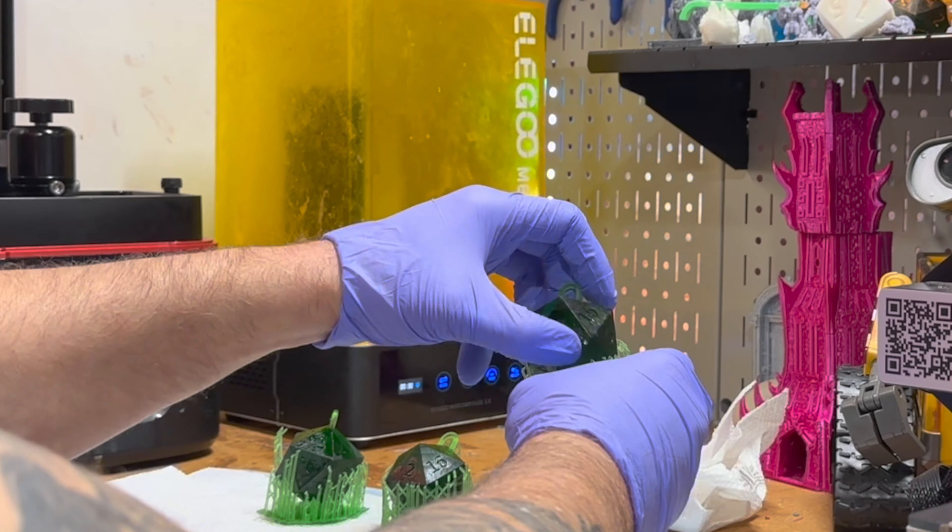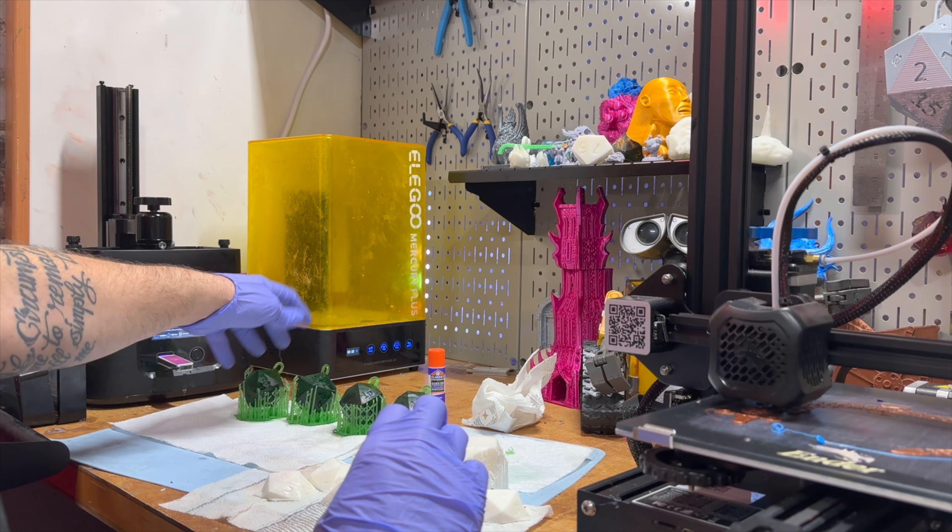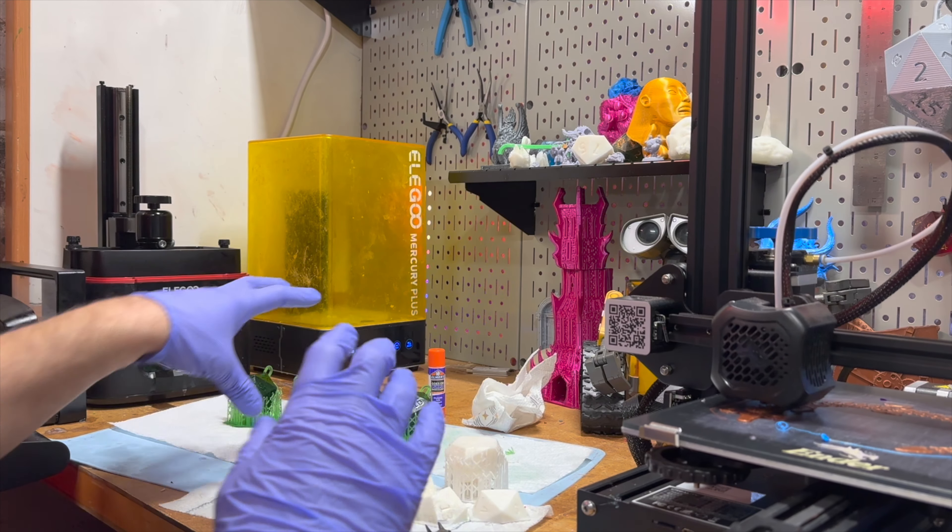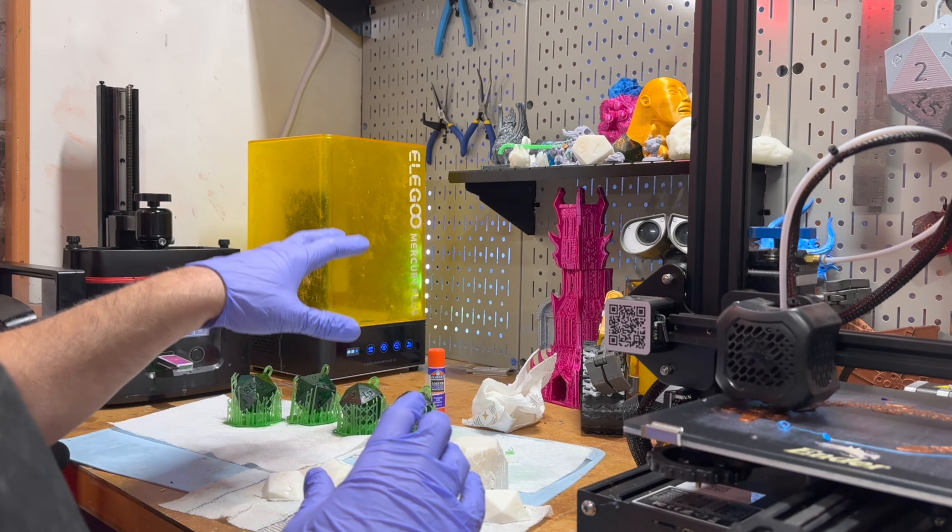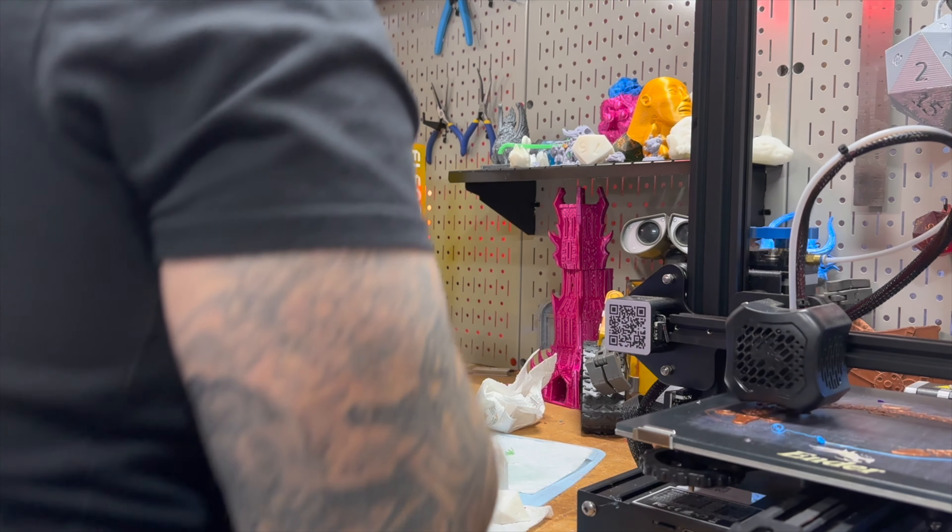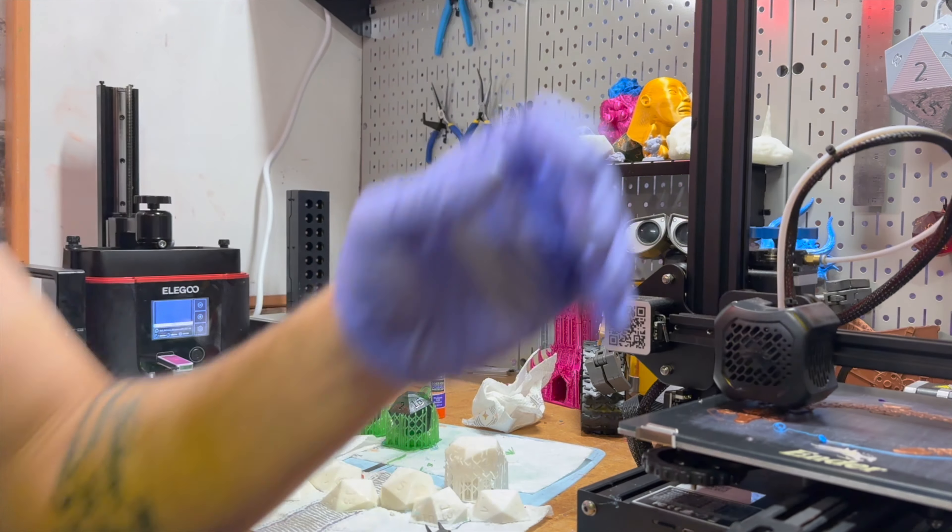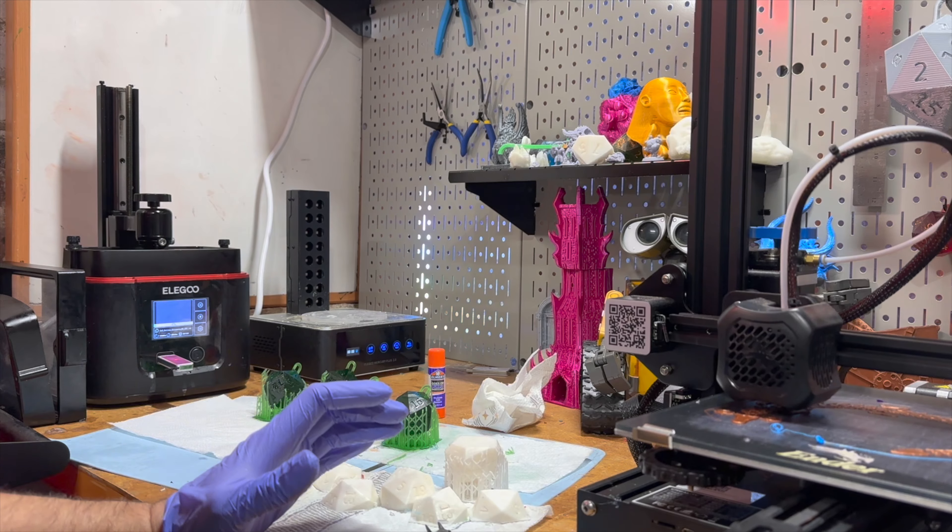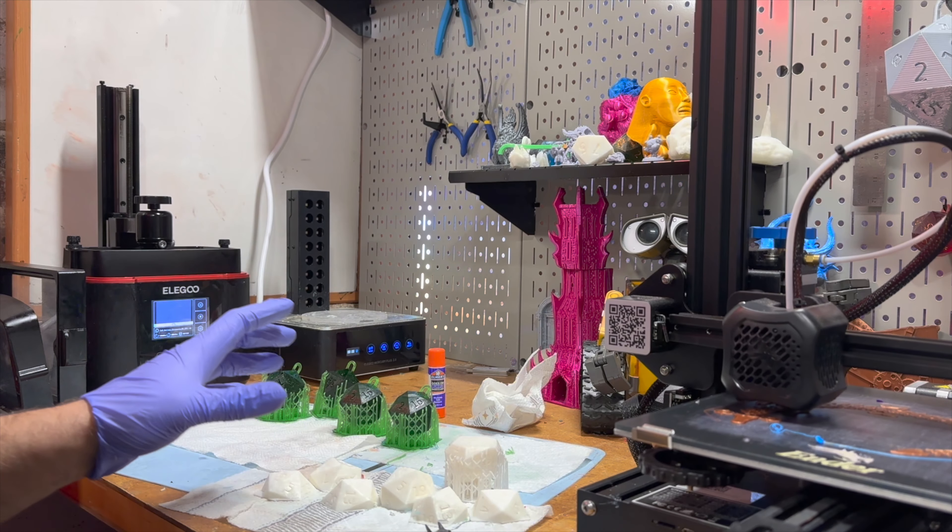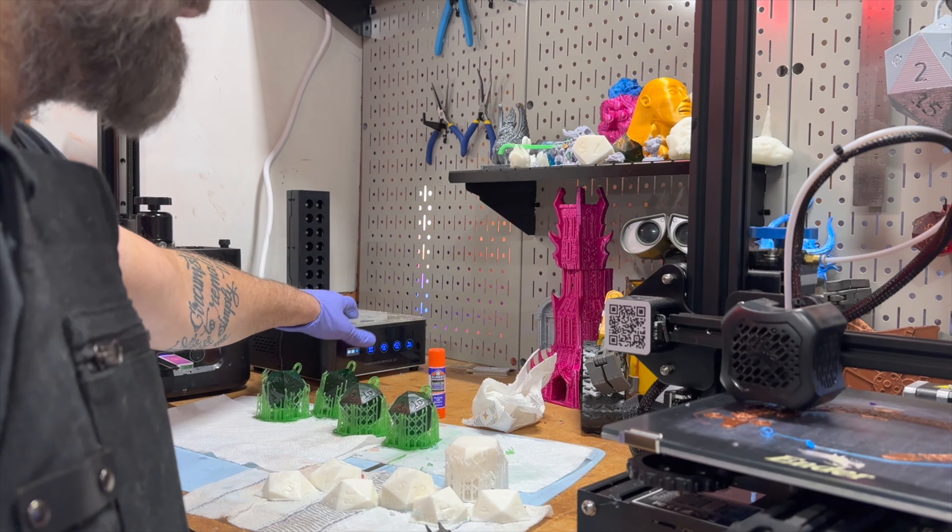Now I never cure my prints with the supports fully attached. But what I do is I break the supports away and then I lay this in here and it's just the way I cure my models. So what I'm going to do is I'm going to take this. Now you can see I do a lot of production runs of things so I print a lot of stuff. So you can see here that this is pretty beat up.